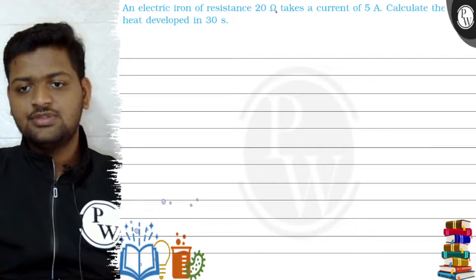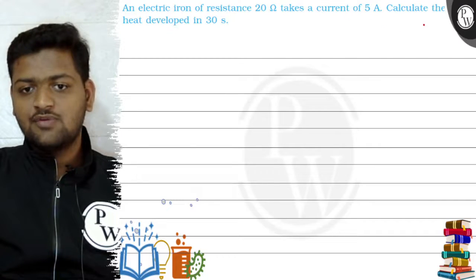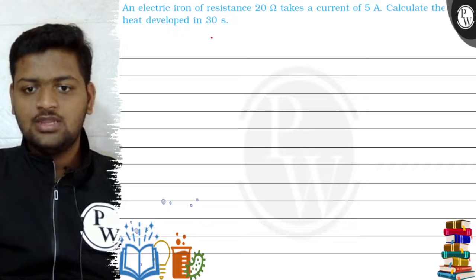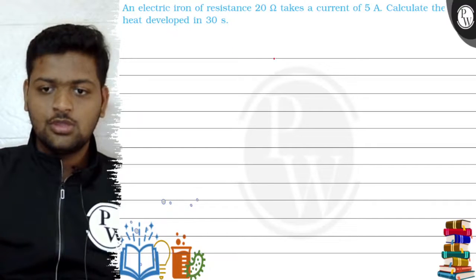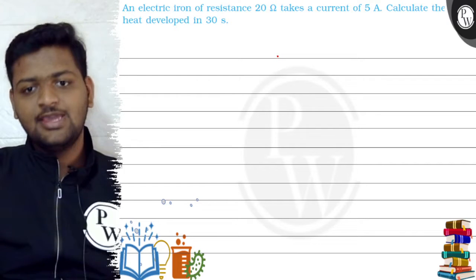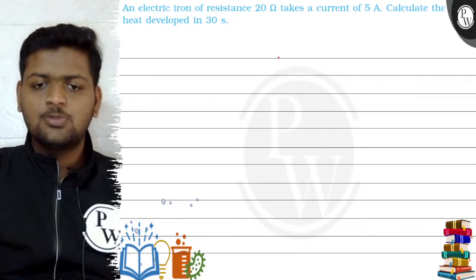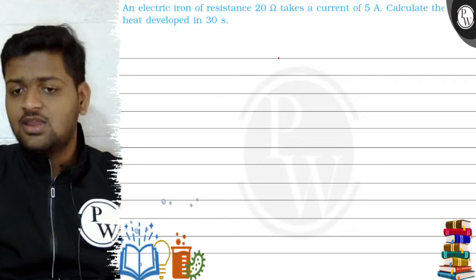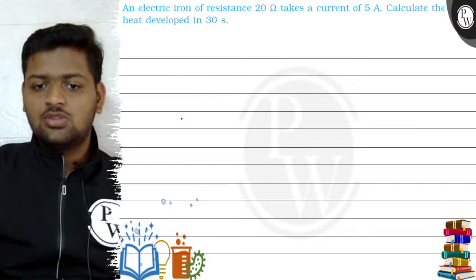This question: an electric iron of resistance 20 ohms takes a current of 5 ampere. Calculate the heat developed in 30 seconds. So here what we will do is by applying Ohm's law first we will find voltage. Once we get the voltage, we will put it in the formula of heat generated and we'll get our answer.